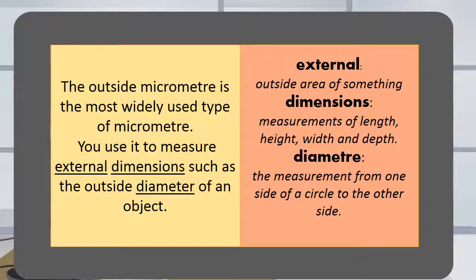External is the outside area of something. Dimensions are measurements of length, height, width and depth. Diameter is the measurement from one side of a circle to the other side of the circle.